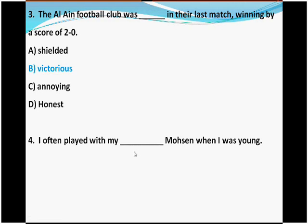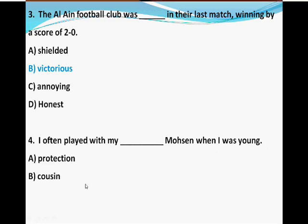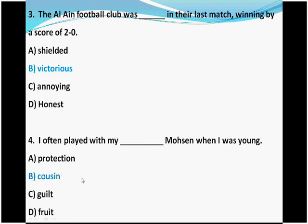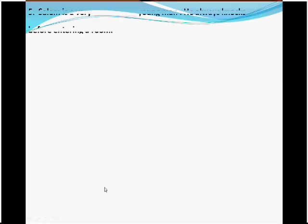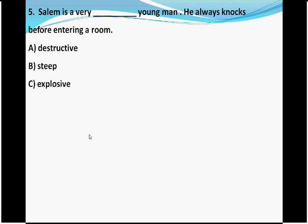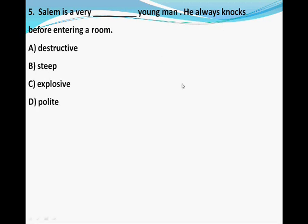Question four — 'I often played with my ___ Mohsin when I was young.' Options: A) protection, B) cousin, C) guilt, D) fruit. Protection, guilt, and fruit are completely wrong. The correct answer is B, cousin — a relative. Question five — 'Salim is a very ___ young man. He always knocks before entering a room.' Options: A) destructive, B) steep, C) explosive, D) polite. A, B, and C are wrong. The correct answer is D, polite — he knocks before entering, which is polite behavior.